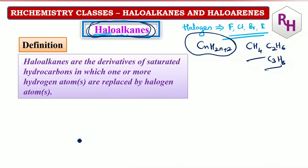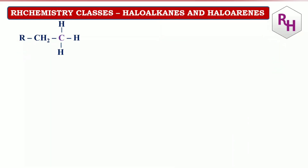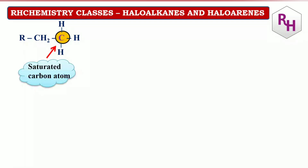Now, the definition: Haloalkanes are nothing but derivatives of saturated hydrocarbons in which one or more hydrogen atoms are replaced by a halogen atom. Very simple. So one or more hydrogen atoms are replaced by halogen atoms. This is an alkane — remember, single bond means saturated carbon.